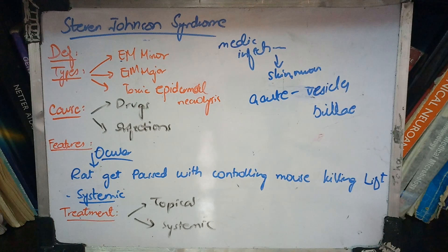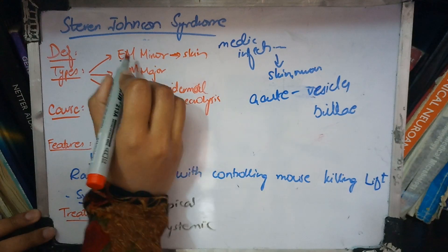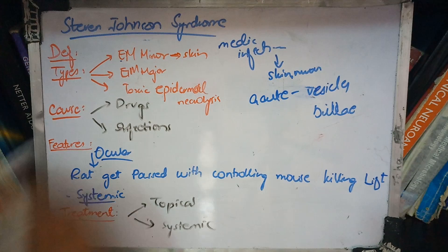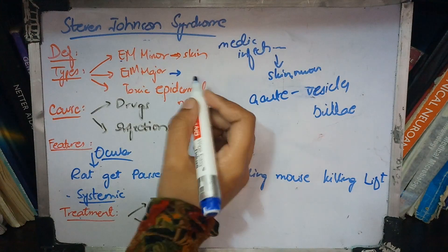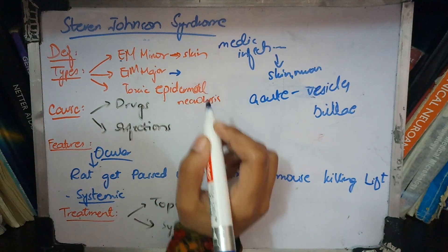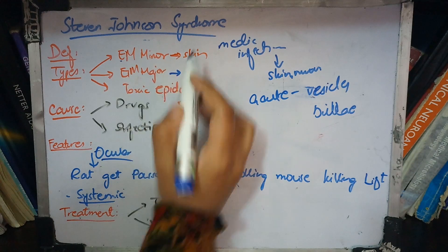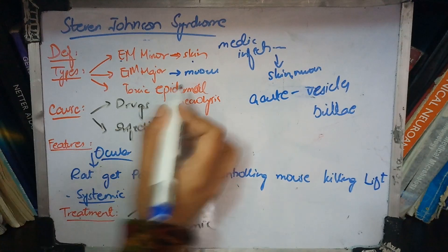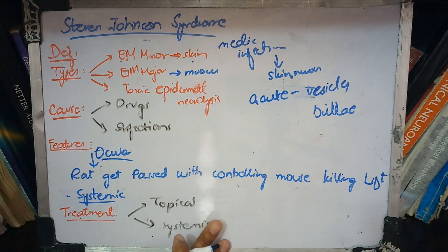We have three types depending on severity. If only the skin is involved, we call it Erythema Multiforme Minor. If both skin and mucous membranes are involved — such as the eye, genitalia, or mouth — it is called Erythema Multiforme Major, also known as Stevens-Johnson Syndrome. The most severe form, where the entire epidermis undergoes necrolysis and almost nothing is left, is called Toxic Epidermal Necrolysis.